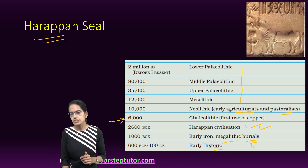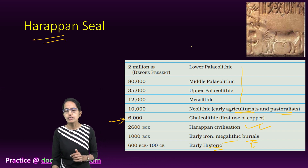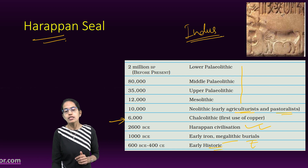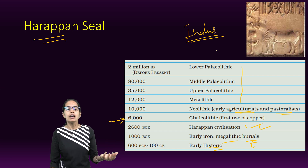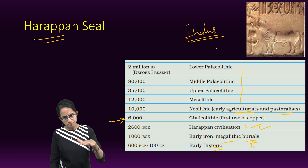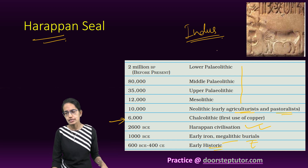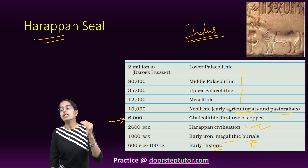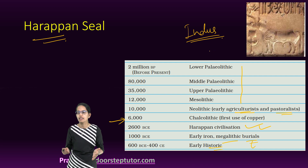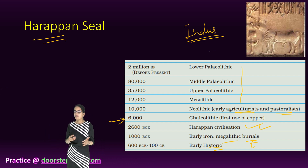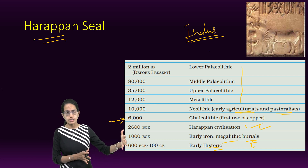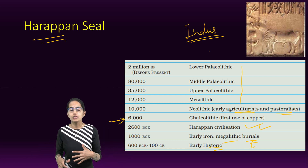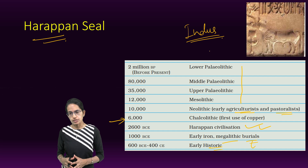Harappan culture itself is a very unique culture. It is also known as the Indus Valley civilization. Its origin is in the locations of present-day Pakistan, and we have excavation sites in India as well as present-day Pakistan. Even in the regions of Afghanistan, Gujarat, Balochistan, and Cholistan - which is the Thar Desert extension in Pakistan - are areas where the Harappan civilization has been found.